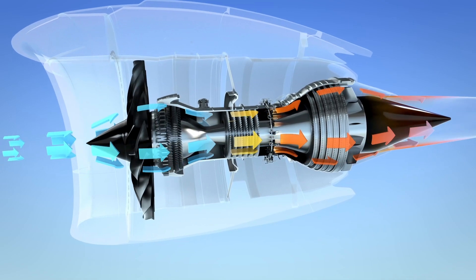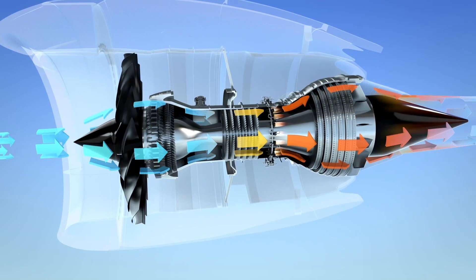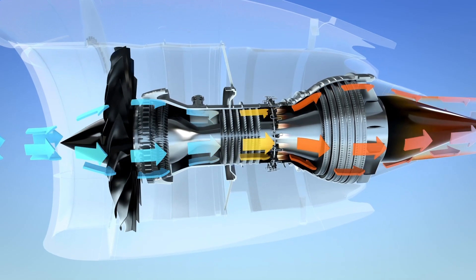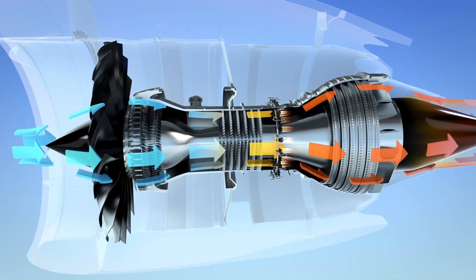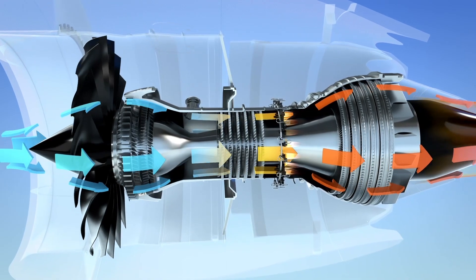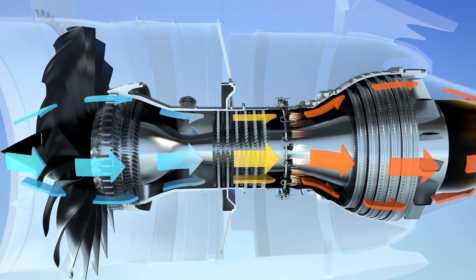The hot, pressurized exhaust gas provides the thrust that propels the plane forwards. One way to reduce the harmful pollutants released by the engine is to change the combustor design from rich to lean burn flames.